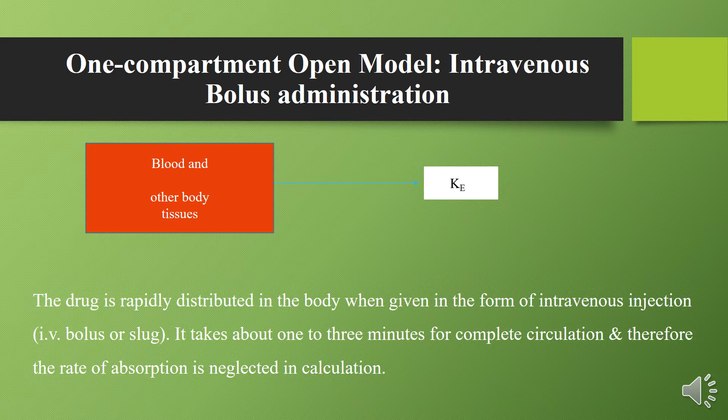First, you are supposed to draw the model diagram — a block diagram. In case of IV bolus administration, from the blood and other body tissues, the drug is rapidly eliminated. The drug is rapidly distributed in the body in the form of an IV injection, either as an IV bolus or slug, and it takes about one to three minutes for complete circulation.